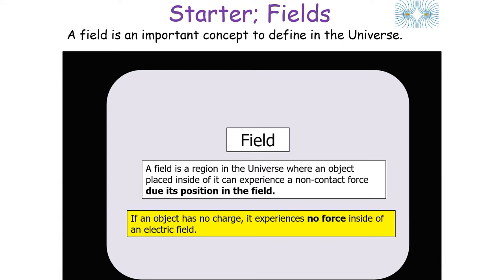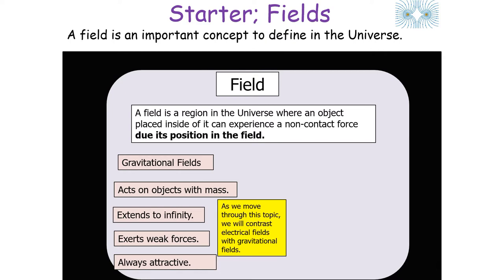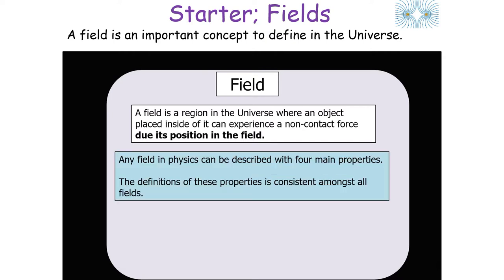If an object has no charge it experiences no force inside an electrical field. Previously we've considered gravitational fields: they act on objects with mass, extend to infinity, exert weak forces and are always attractive. By contrast, electrical fields act on objects with charge, extend to infinity, exert strong forces and can be attractive or repulsive.